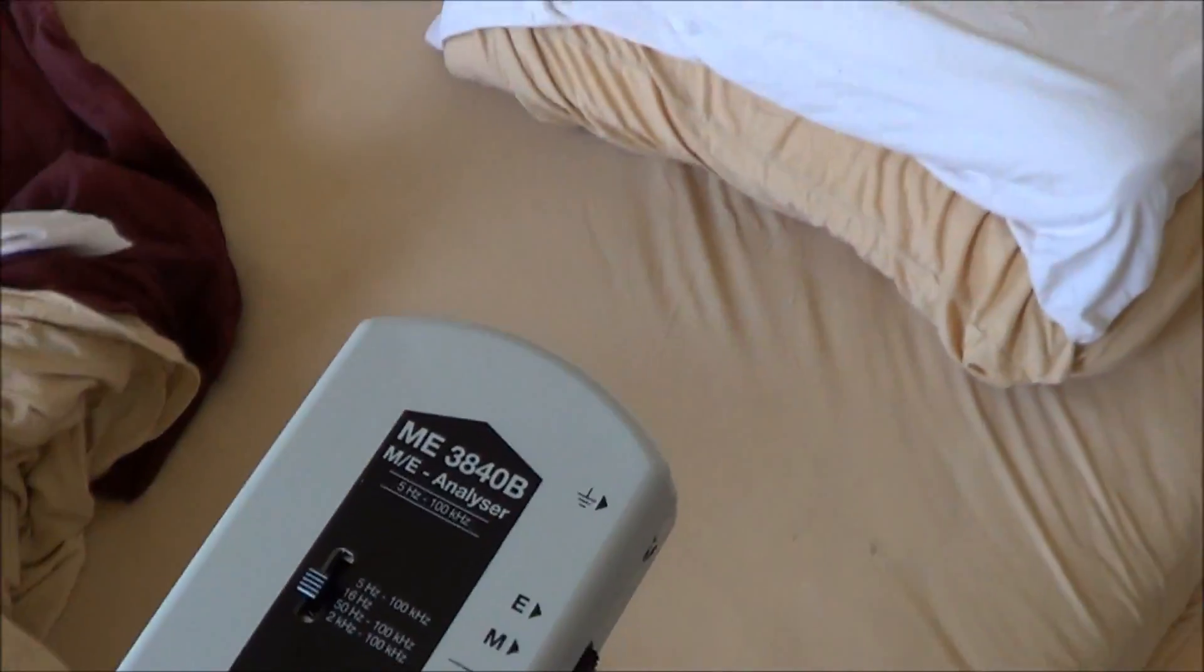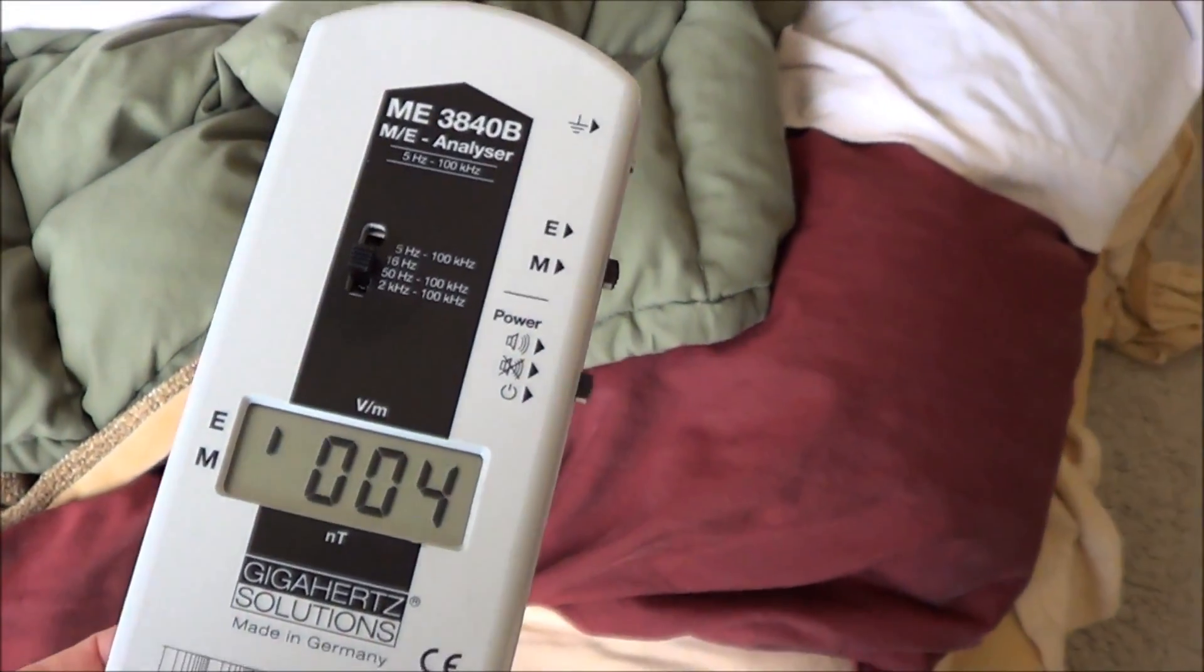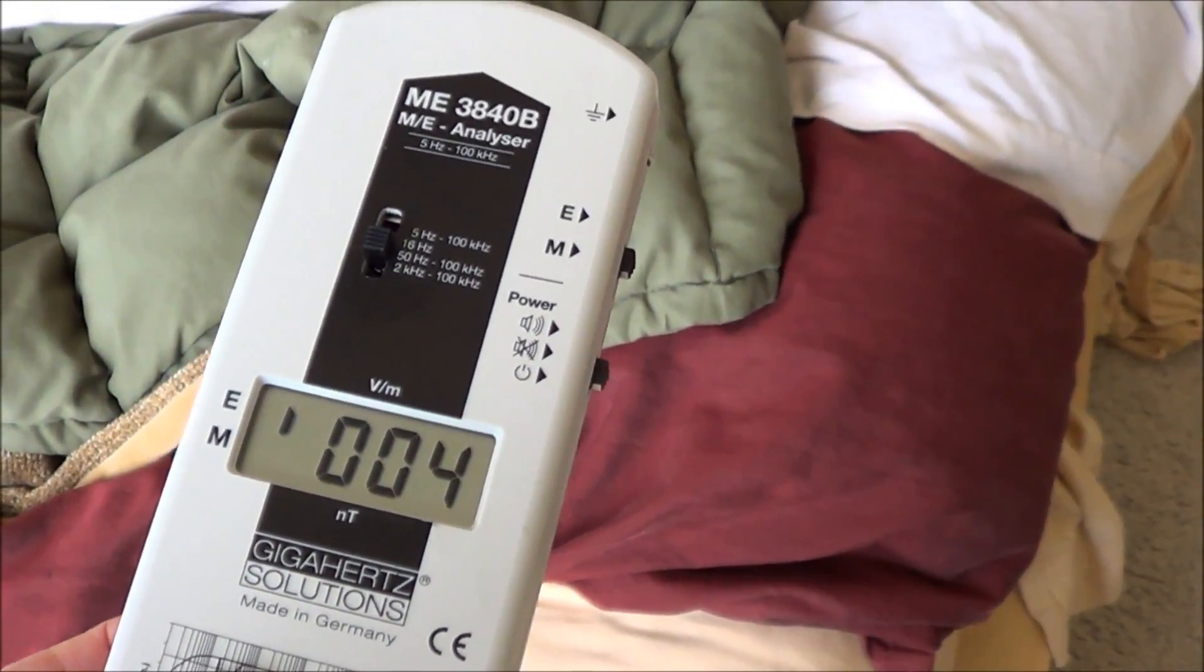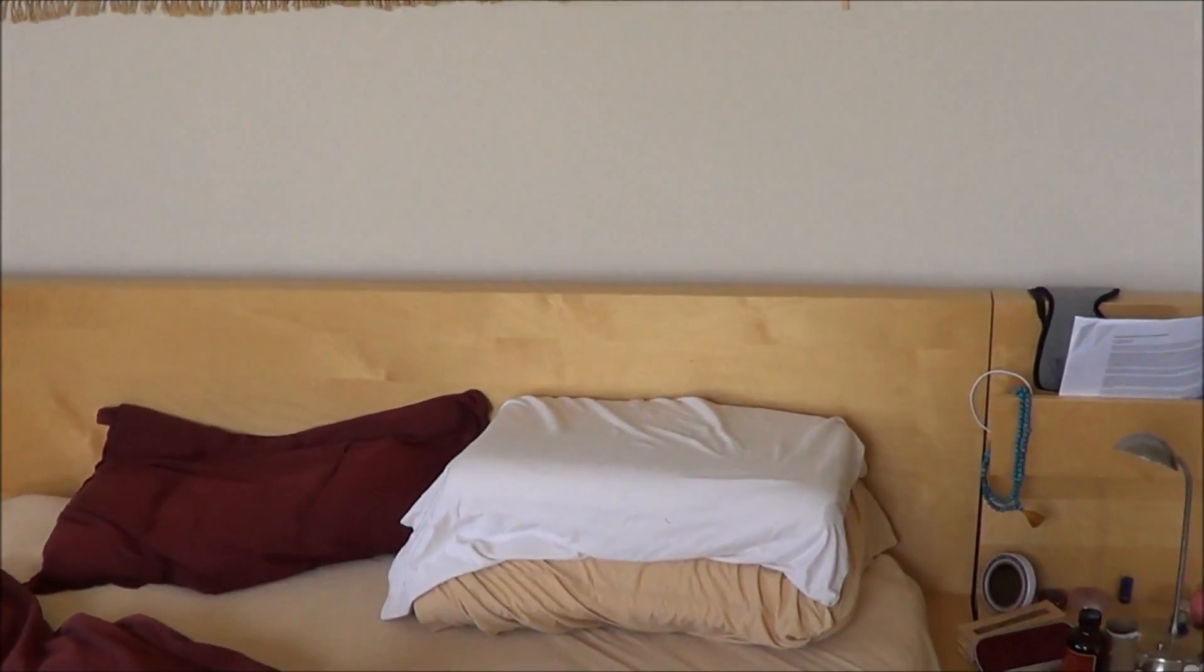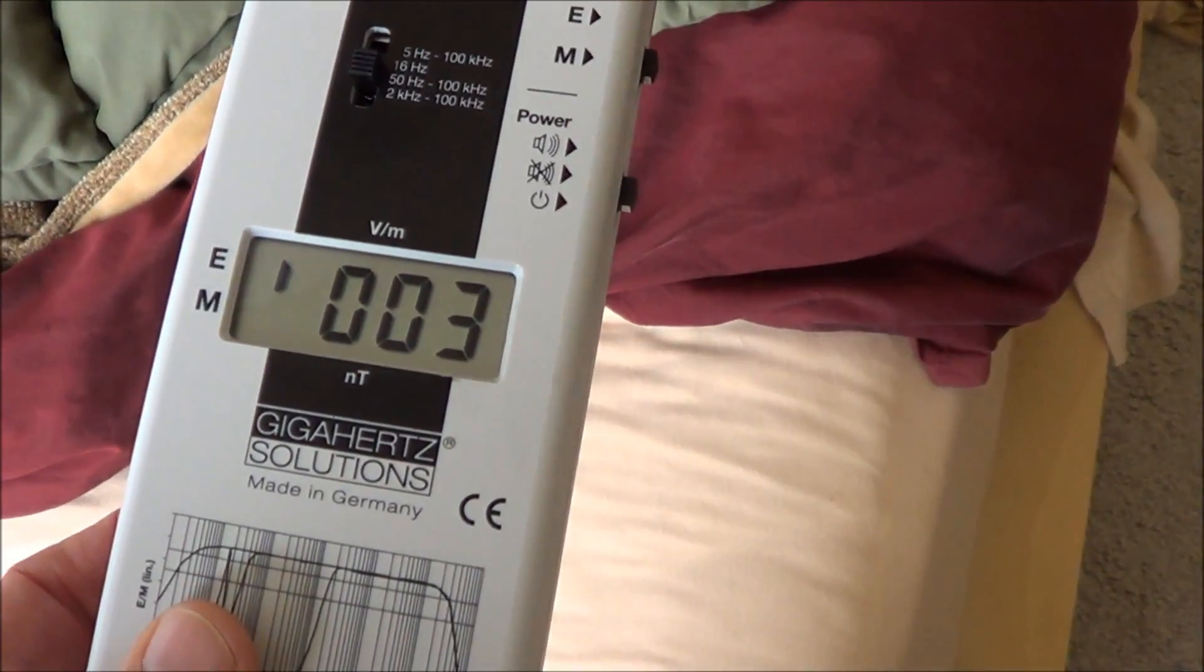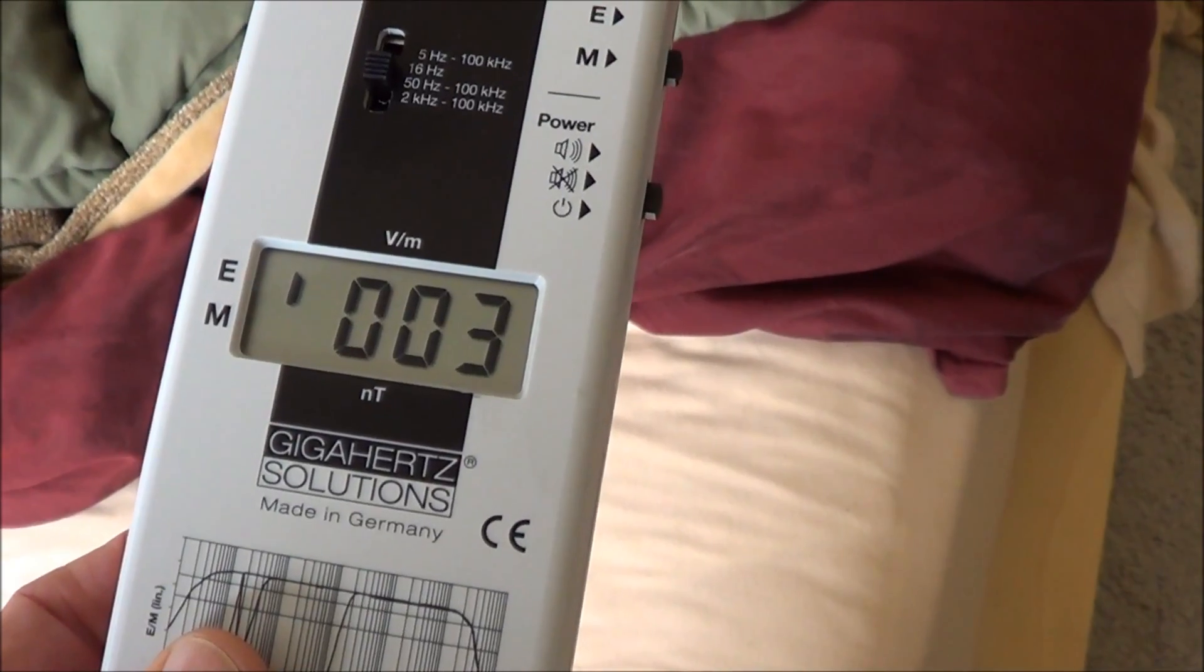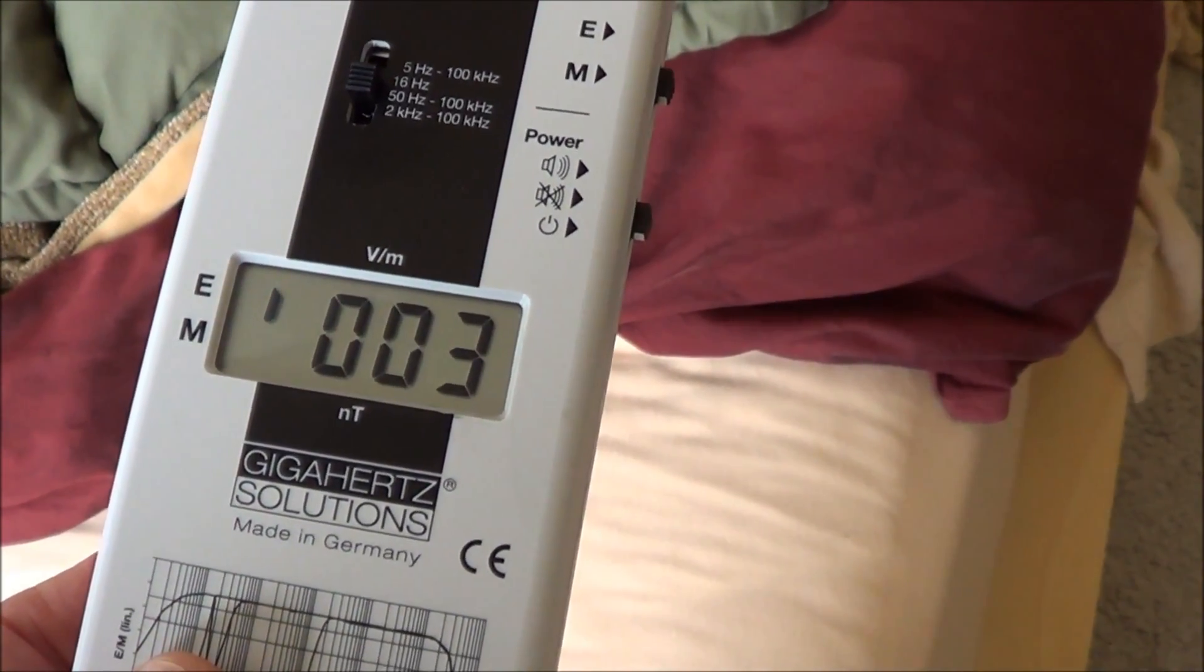Now I'll show you something else. Here at the foot of the bed, you can tell I didn't make a professional video by trying to make the bed look good. Now here at the foot of the bed, alright, we're all the way down here. And the meter drops to 3-4 volts per meter. So the electrical field drops way down.